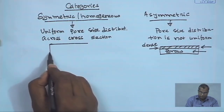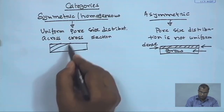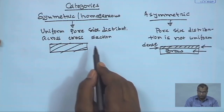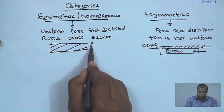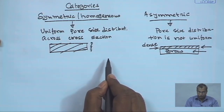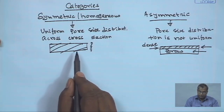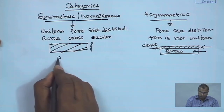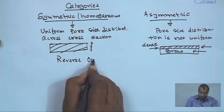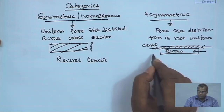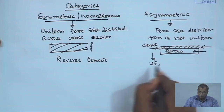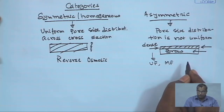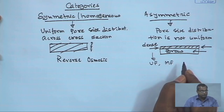Because the actual separating layer is the thin skin, the throughput of the process will be very high compared to a homogeneous or symmetric membrane. In symmetric membranes the pore size distribution is uniform throughout, so the thickness is very high which decreases the throughput. A symmetric or homogeneous membrane is a kind of reverse osmosis membrane. Other membranes like all grades of ultrafiltration and microfiltration are typically asymmetric, and because of the smaller skin thickness, the throughput is higher.